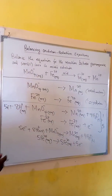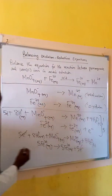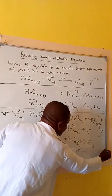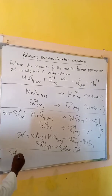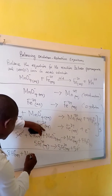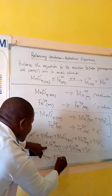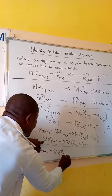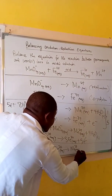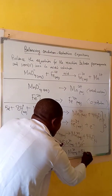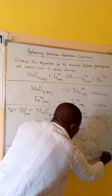We cancel the identical species appearing on both sides — in this case the five electrons cancel. We then add the two reactions together to get the overall balanced equation: eight H⁺(aq) plus MnO₄⁻(aq) plus five Fe²⁺(aq) gives Mn²⁺(aq) plus five Fe³⁺(aq) plus four H₂O.